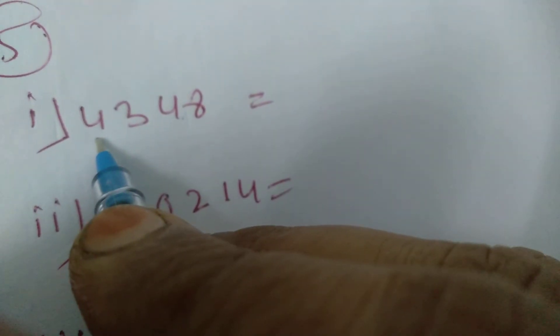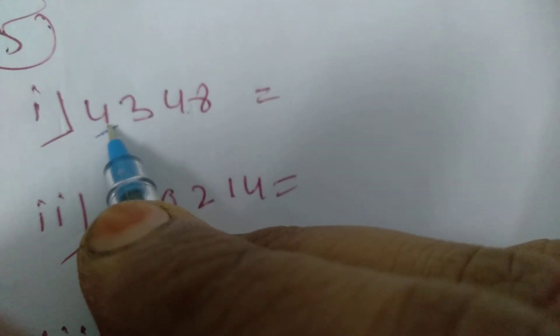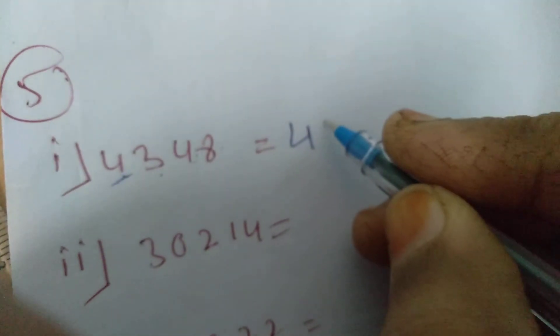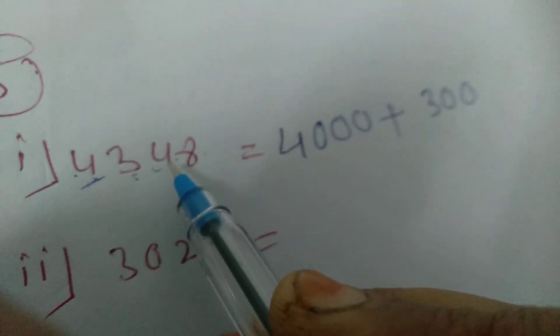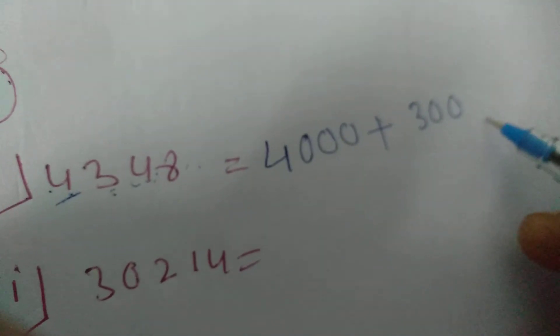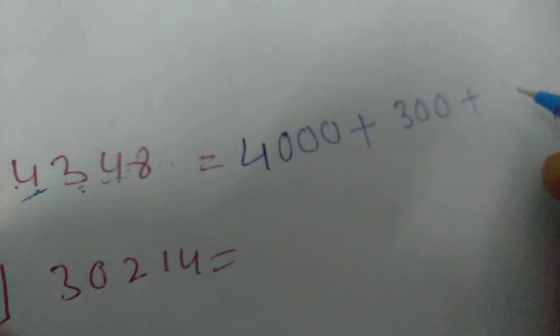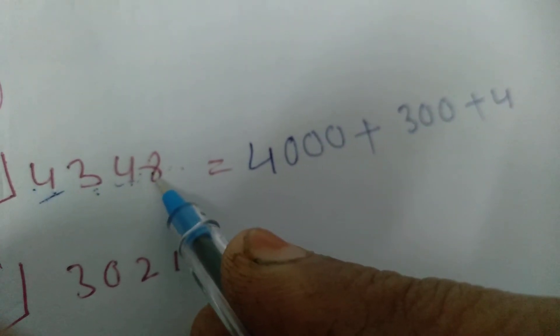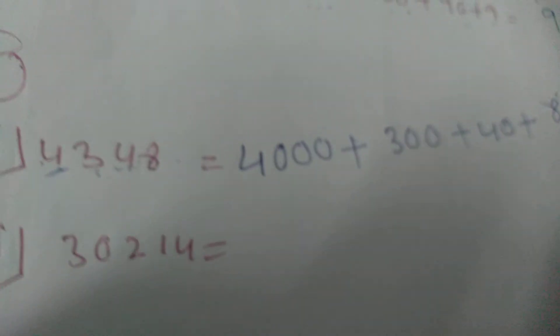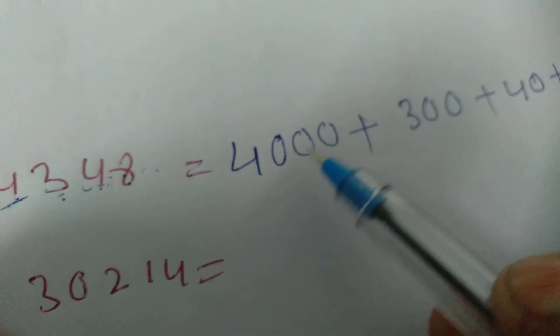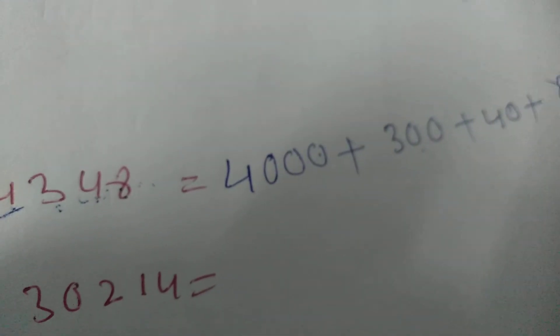Whenever you write a number in expanded form, start from the left. The first number on the left is 4. Write 4 first, then count the remaining digits: 1, 2, 3 — put 3 zeros: 4,000. Plus 300, plus 40 — count 1 digit after, put 1 zero — plus 8. So 4,348 = 4,000 + 300 + 40 + 8.